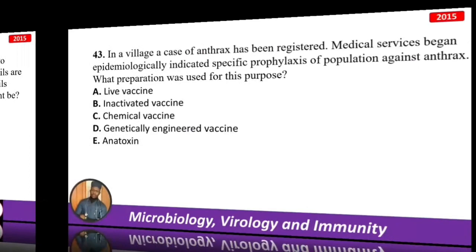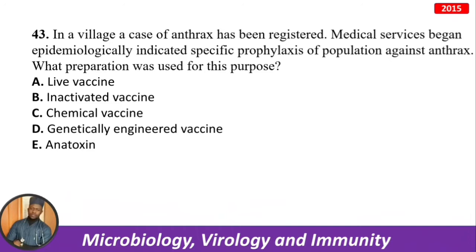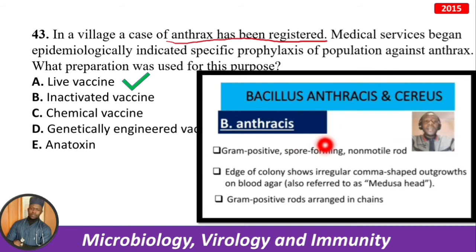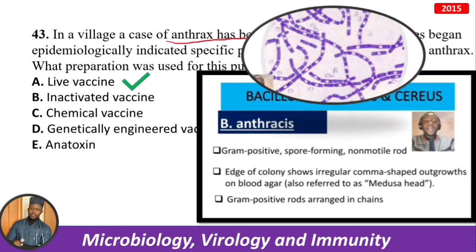In a village, a case of anthrax has been registered — anthrax live vaccine, no need to think further. Anthrax is a gram-positive, spore-forming, non-motile rod. Colony edges show irregular comma-shaped outgrowths on blood agar — referred to as Medusa head. Gram-positive rods are arranged in chains. That is anthrax.